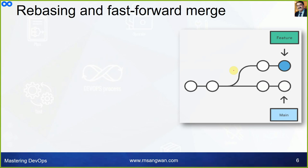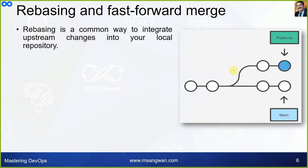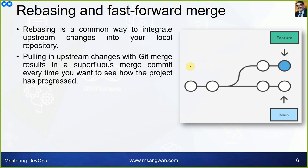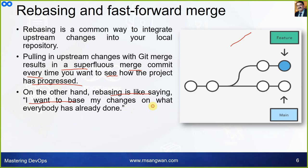Let's understand rebasing with fast-forward. How does a fast-forward merge work? Rebasing is a common way to integrate upstream changes into your local repository. Pulling in upstream changes with git merge results in a superfluous merge commit every time you want to see how the project has progressed. On the other hand, rebasing is like saying: I want to base my changes on what everybody has already done — I want to fast-forward, and internally Git will apply all those commits that others have done.